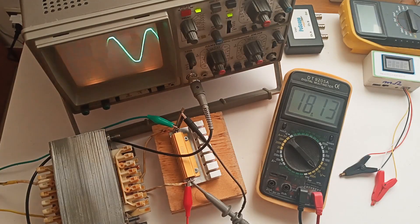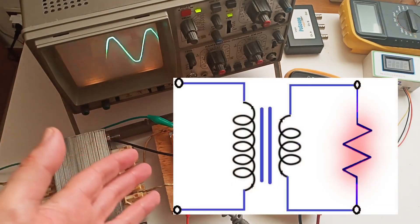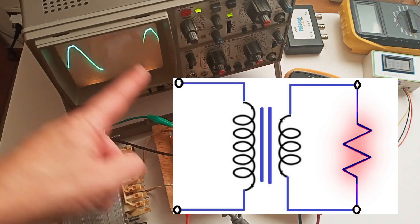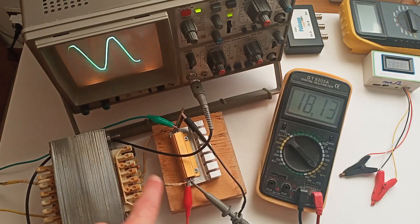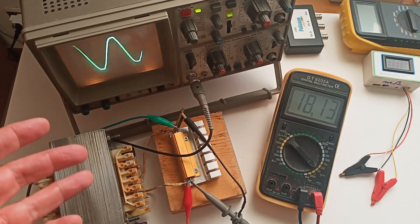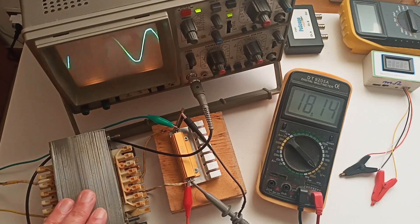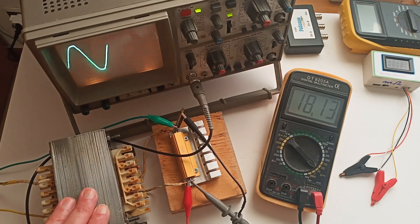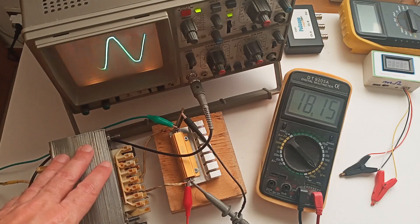It is now interesting to observe how connecting a power load to the transformer's output causes a natural voltage drop due to the transformer's internal resistance. Calculating this voltage drop is very useful in determining the transformer's rated power.